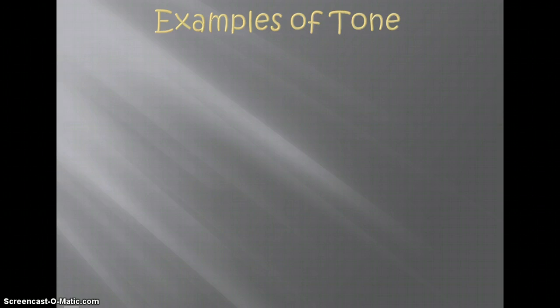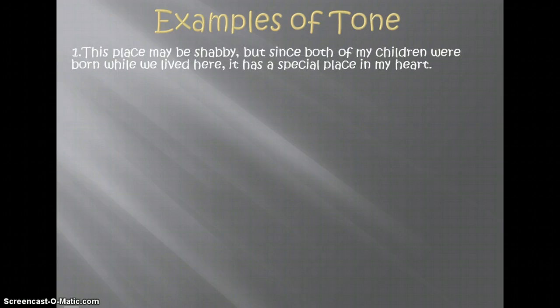Five different tones are used: optimistic, bitter, tolerant, sentimental, and objective. Number one: 'This place may be shabby, but since both of my children were born while we lived here, it has a special place in my heart.' The tone is sentimental — 'it has a special place in my heart' expresses tender emotions.